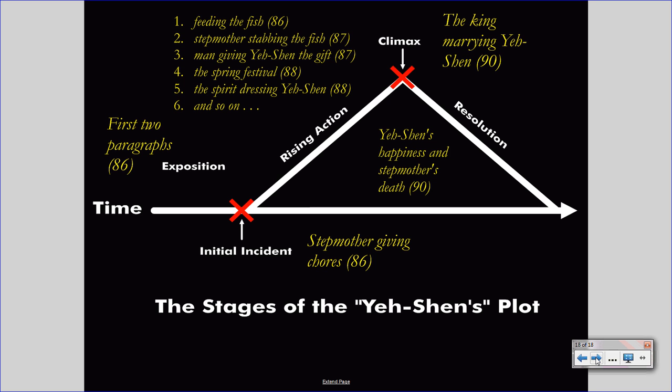The resolution occurs in the last paragraph of page 90, where Yeh-Shen's happiness is depicted and her stepmother and stepsister's deaths are announced. This ends the story and resolves plot details that may have been left confusing after the climax. Once this has been reached, the story is over.